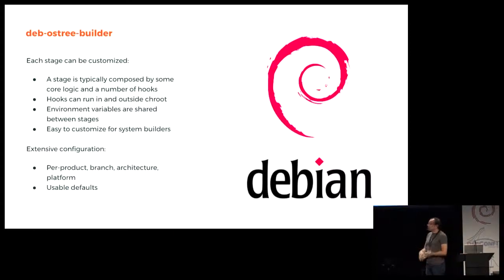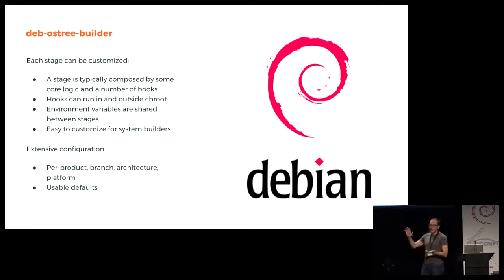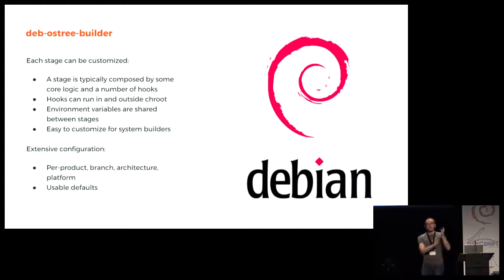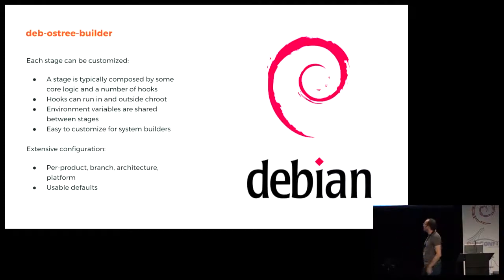Each stage here can be customized. There is core logic to the stage — how you run debootstrap, how you deploy the meta package. Those are core logic. And then there's a number of hooks that a distribution builder can add to each stage — things like publishing to another server, adding new custom files, or changing a configuration in a specific environment.